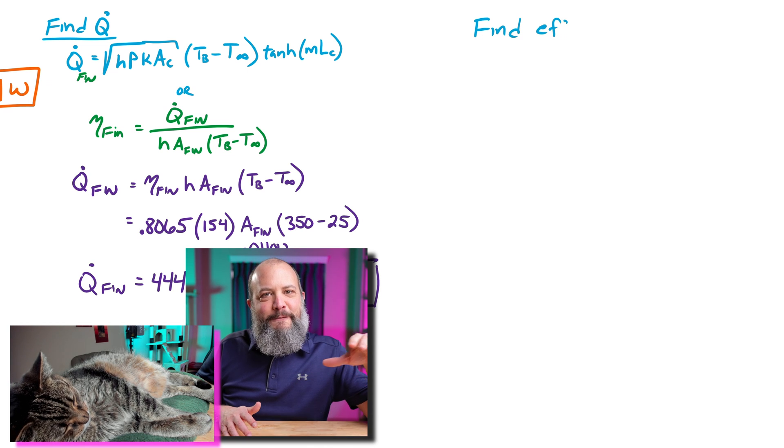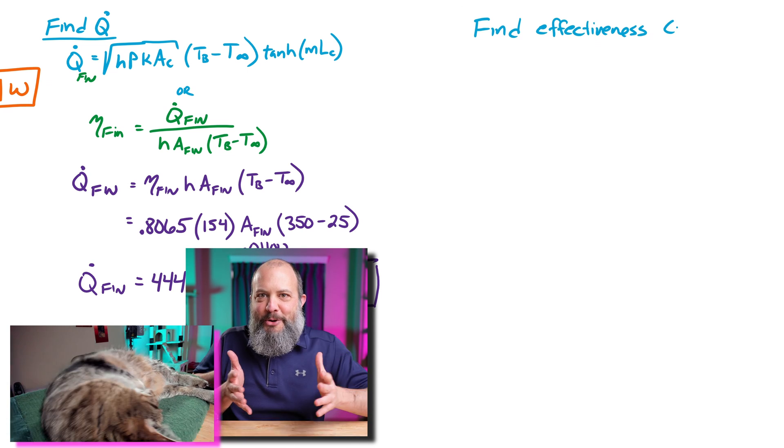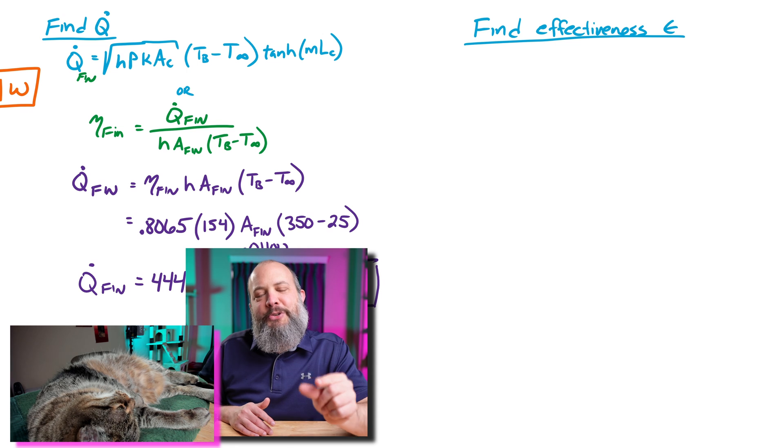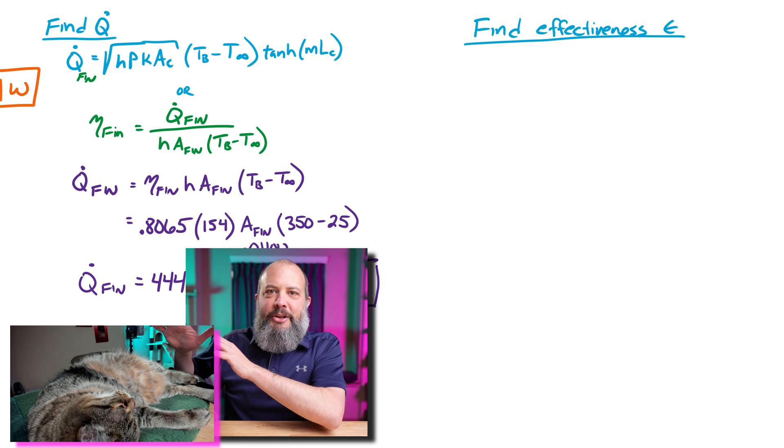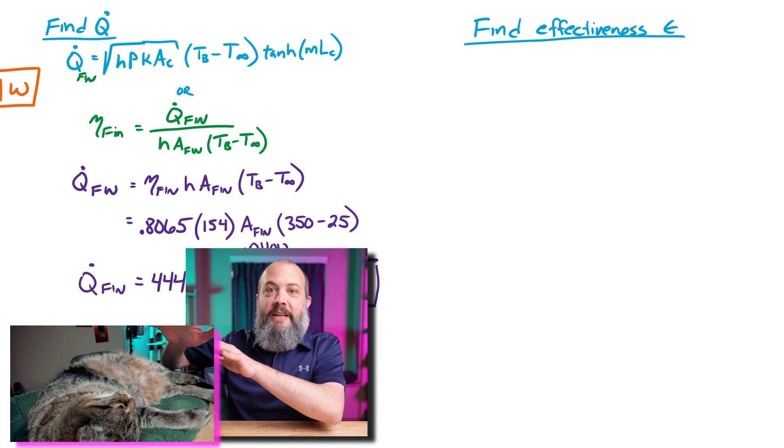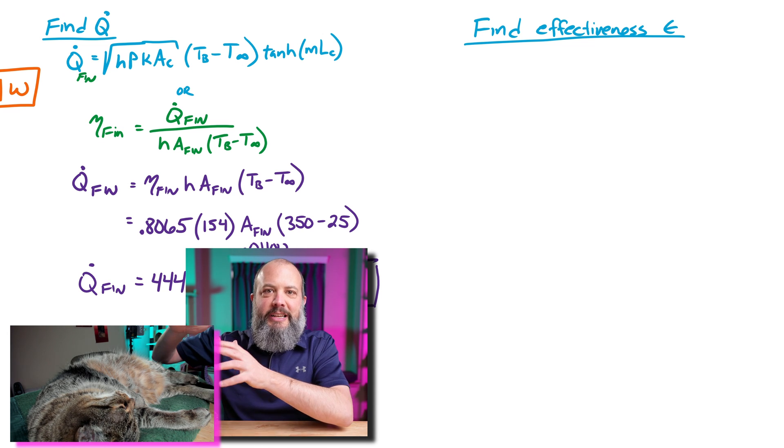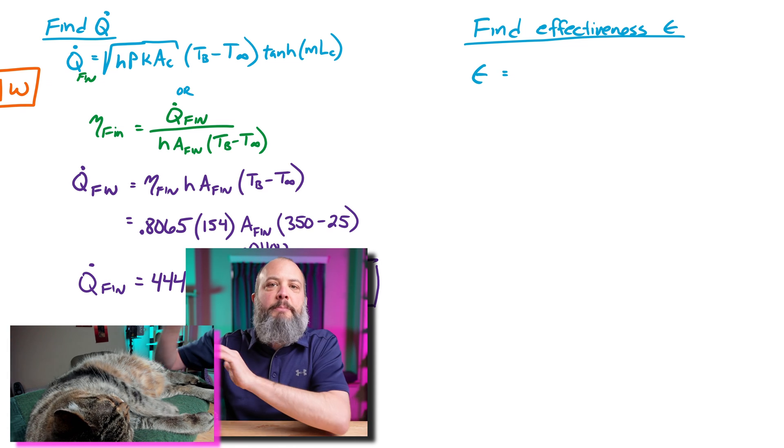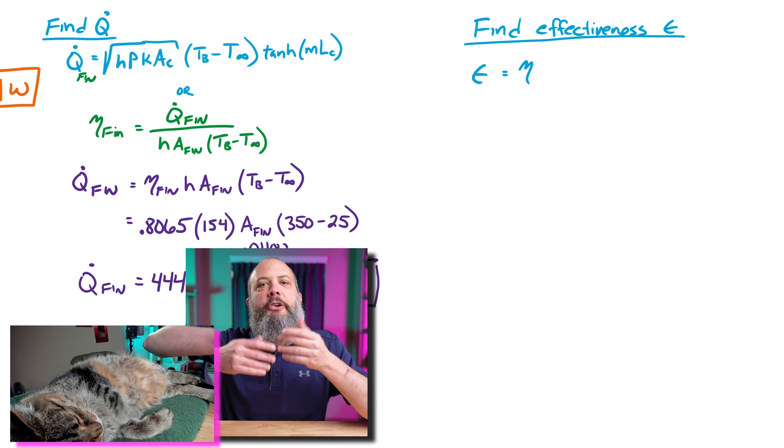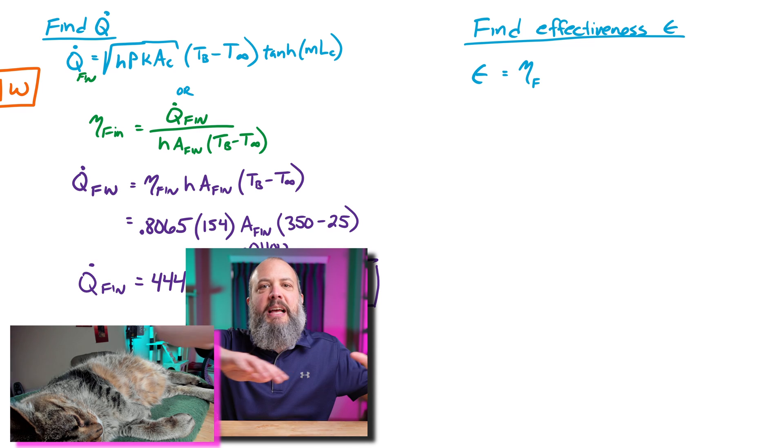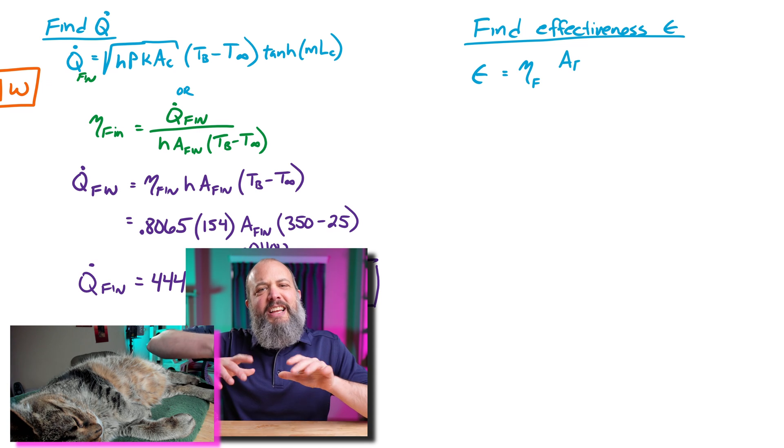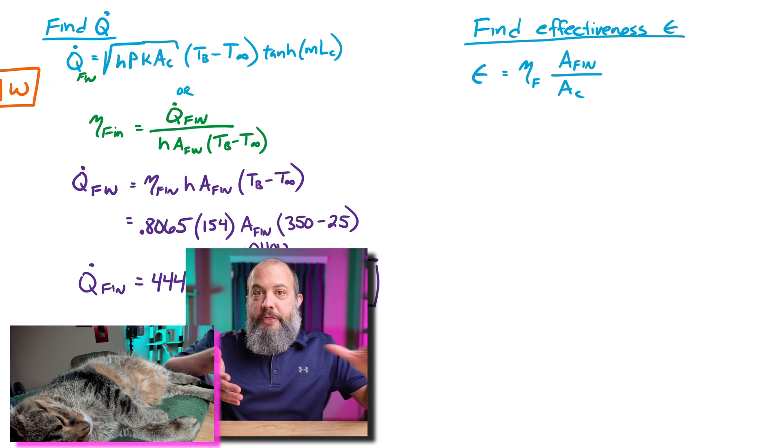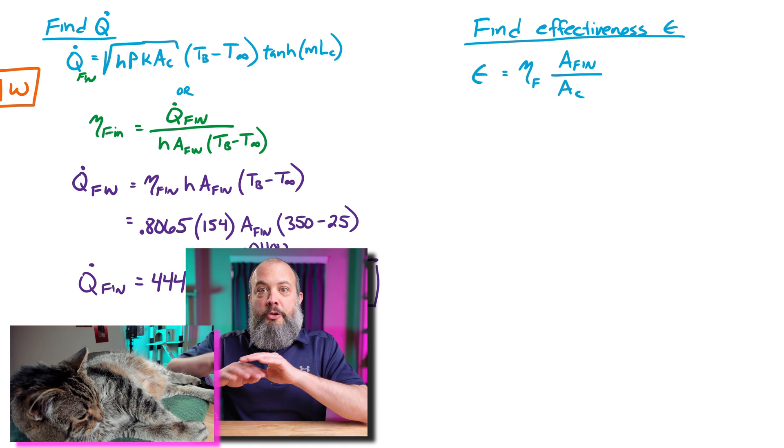So effectiveness and efficiency, both, those are synonyms. They both mean essentially the same thing. So in this context, there's a very subtle difference between them. Efficiency was the heat transfer of the fin divided by heat transfer of the fin if the whole thing were the same temperature. So efficiency essentially accounts for how good of a conductor the fin is, like how close the fin is to all being the same temperature as the wall. Efficiency, therefore, is more about temperature, the temperature of the wall versus like the changing temperature throughout the fin. Effectiveness is more about surface area.